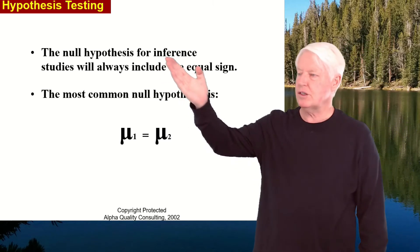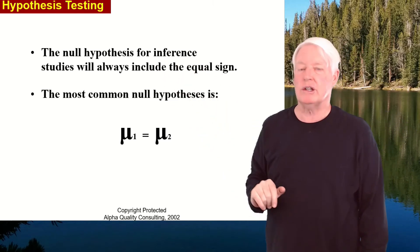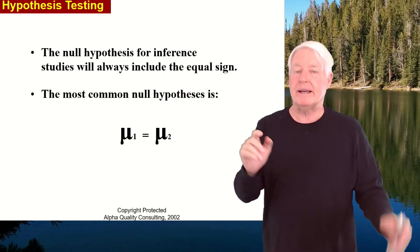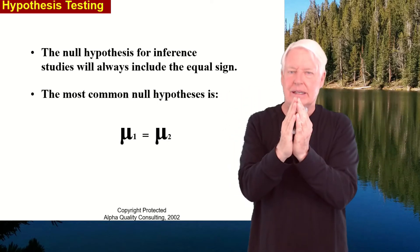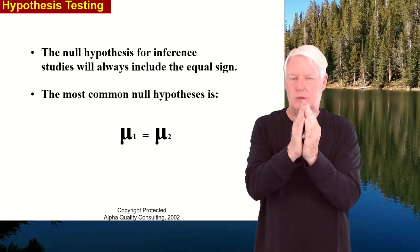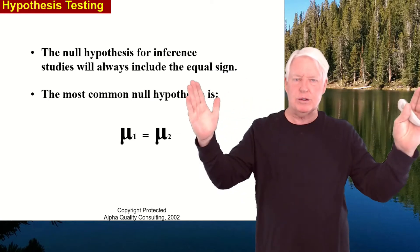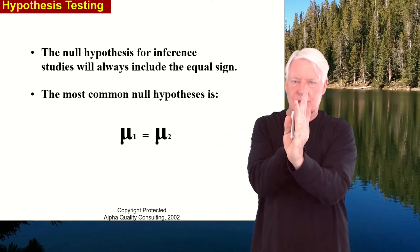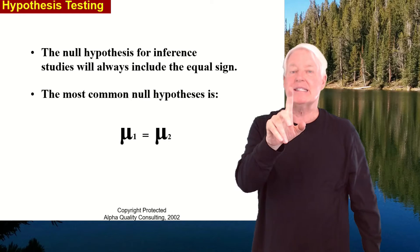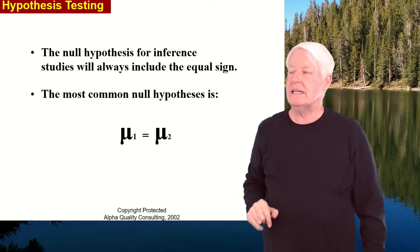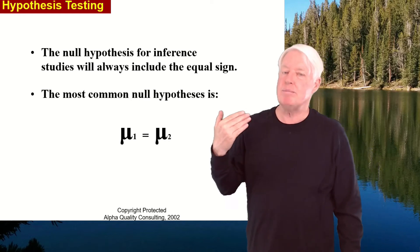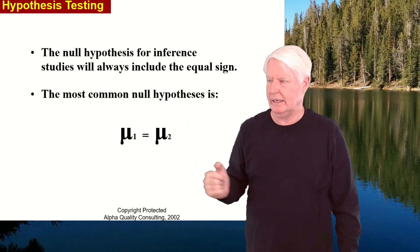The null hypothesis for inference studies will always include the equal sign. Why? Because null means zero, nada, the same. No difference between the averages. I have two distributions. Their averages are exactly the same. That's null. Null means equal. So the null hypothesis must have an equal sign.